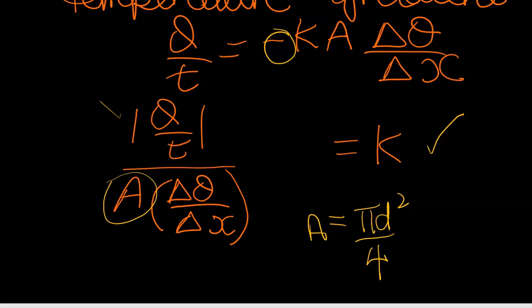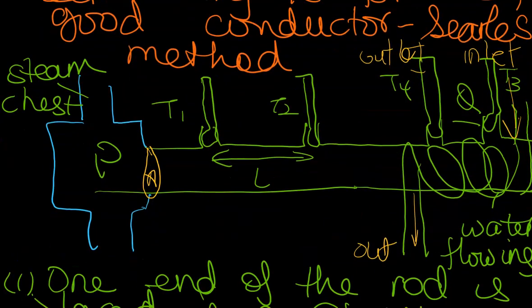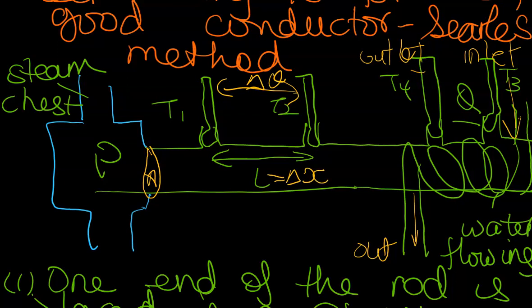Delta theta will be, we are considering here, this temperature difference across thermometers T1 and T2. And of course our change in thickness would be represented by L. Now the problem is, how do we get Q over t?